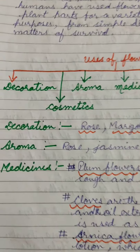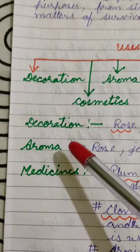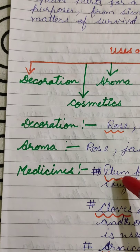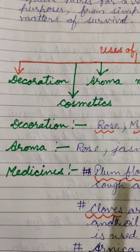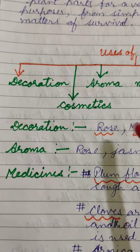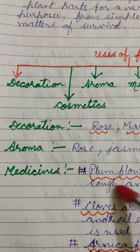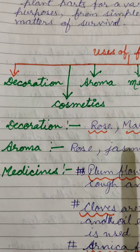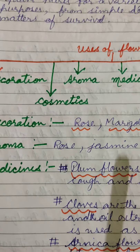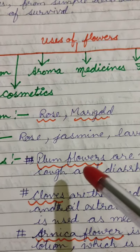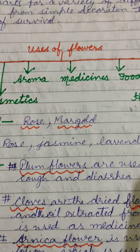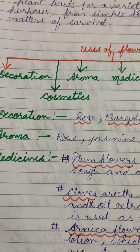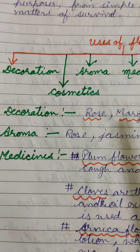The next use of flowers is aroma. Aroma means fragrance. Different flowers are used for making perfumes. First the aroma is extracted from the flower and that is used for making perfumes. Flowers like rose, jasmine, and lavender are used for making perfumes.